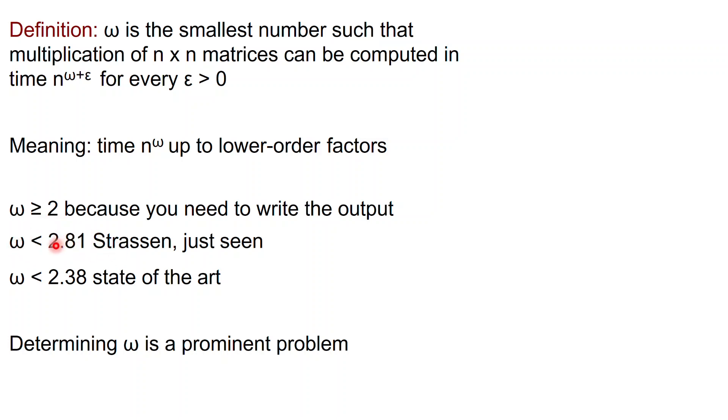We have just flashed Strassen's algorithm which runs in time which has omega less than 2.81. And I want you to know that there are even fancier algorithms which achieve omega less than 2.38. Determining omega is a very prominent problem in computer science. And this is all that we're going to say about matrix multiplication. Now we turn to a second example of the divide-and-conquer algorithm for this video.